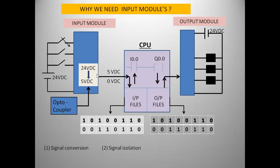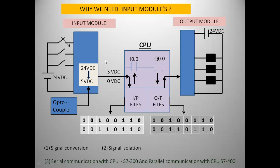There is signal isolation here. You can also find out how an optocoupler works on YouTube. There is also signal communication — for example, with a 300 series CPU it is serial communication, while every 400 series controller uses parallel communication between modules, meaning multiple input-output statuses are transferred at once. In serial communication, data is transferred one by one.